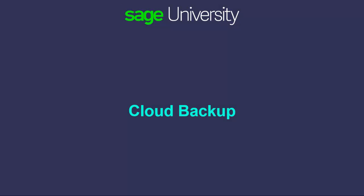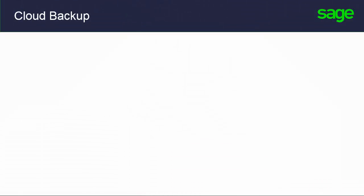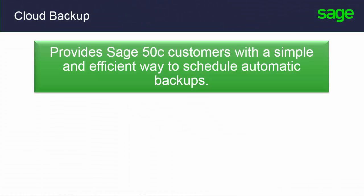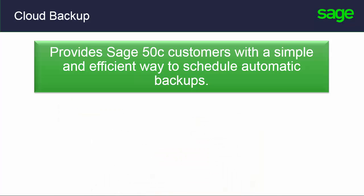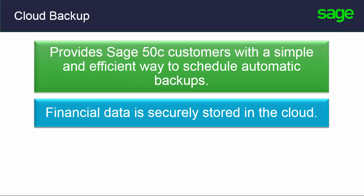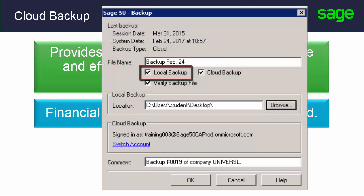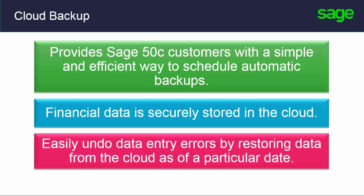Automatic online backup is another feature delivered through the integration with Microsoft Office 365. This top requested feature provides Sage 50C customers with a simple and efficient way to schedule automatic backups. It brings you peace of mind knowing your financial data is securely stored in the cloud. You can still create local backups or choose to store them in the cloud, and you can easily undo data entry errors by restoring data from the cloud as of a particular date.